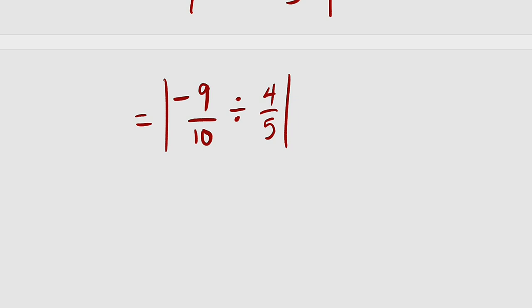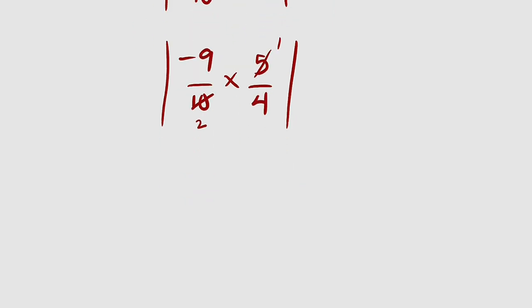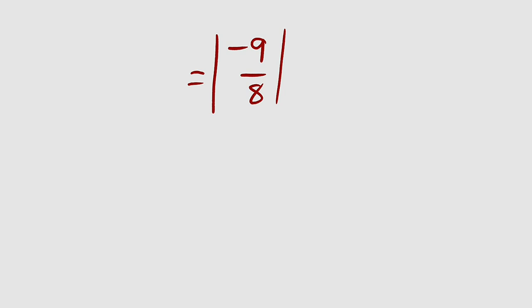You can change it to multiplication by taking the reciprocal of this. We have negative 9 divided by 10 times 5 divided by 4 in an absolute value. You know 5 can go into 10 two times. So this is equal to negative 9 divided by 2 times 4 is 8. Don't forget the absolute value. So the absolute value of negative 9 by 8 will give us positive 9 by 8.